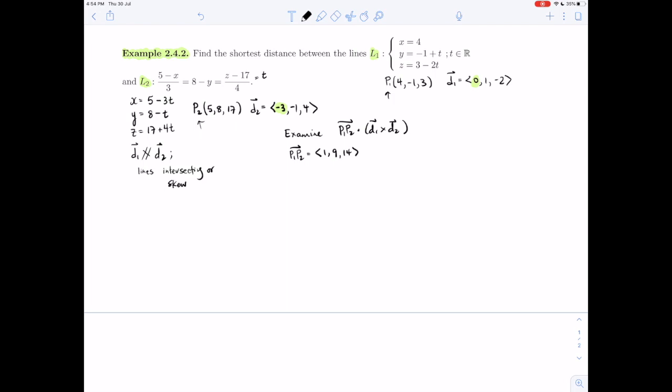Now D1 cross D2, let's evaluate that. So D1 cross D2, D1 is the vector (0, 1, -2), D2 is the vector (-3, -1, 4). So a little bit of recopying here, minus 3, minus 1, 4.